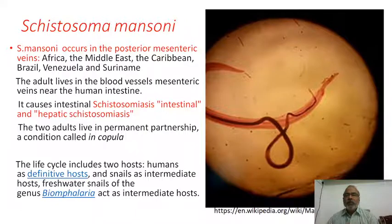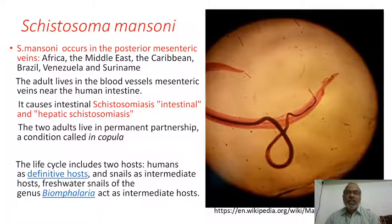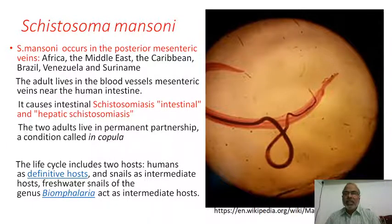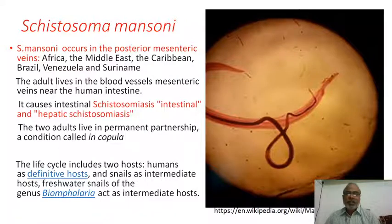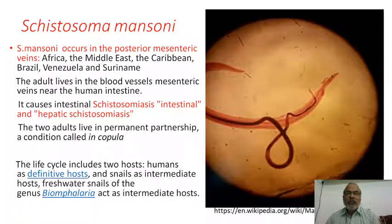A specialty of Schistosoma is that both male and female are separate — they are unisexual — yet they do not live totally separated. They are permanently attached to one another, a condition called copula or permanent wedded condition. The female lives within a special canal of the male called the gynecophoric canal.